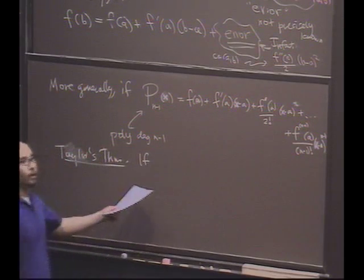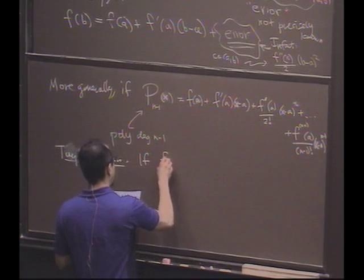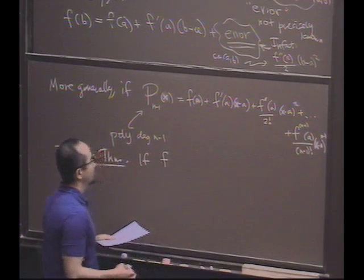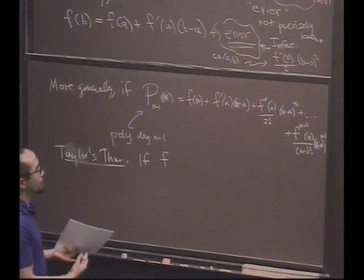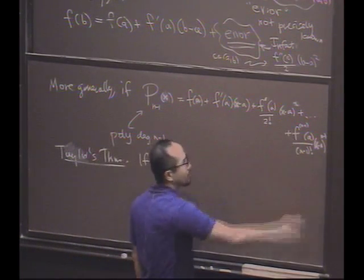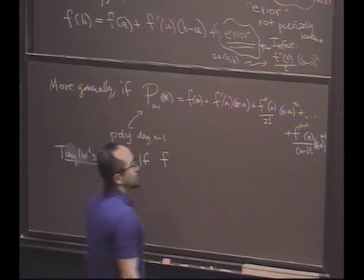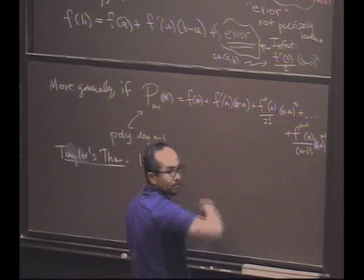This is a real valued function that's continuous. What do we need? We want the function to be defined, we want its derivatives to be defined up through the n minus 1 derivative. If you have the n minus 1 derivative, you have the previous ones.